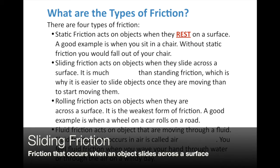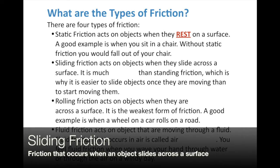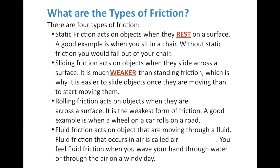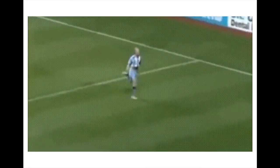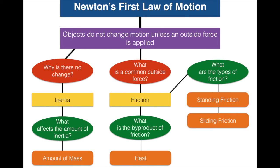The next type is sliding friction. Sliding friction acts on objects when they slide across a surface — it's much weaker than static friction. Static friction is the strongest of the four types. It takes some effort to get a box to start moving across the floor, but once it's going, it's easier because you only need to overcome the sliding friction. As you can see in the example, the sliding friction brought him to a stop — a face plant.